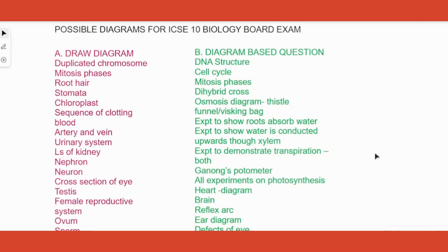In the previous video we looked at the pattern of the question paper wherein we saw that in the second part, that is Section B, there is one three mark question which is going to be either a draw diagram question or a diagram based question.